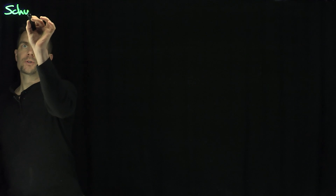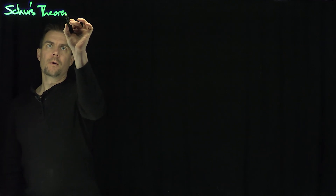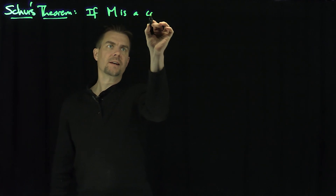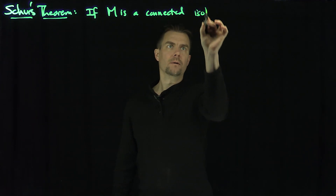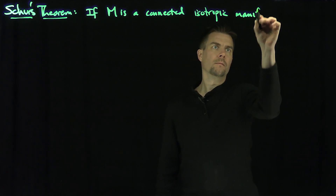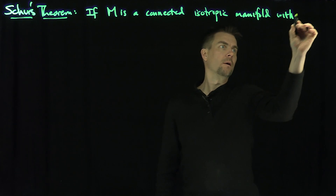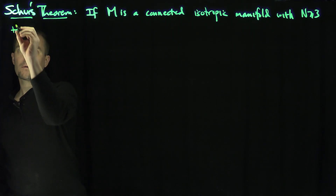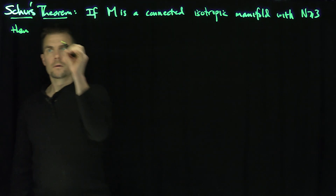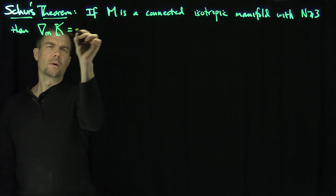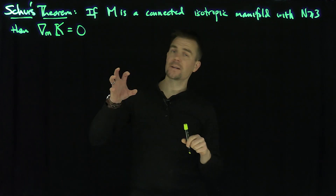Hello students. In this video we will prove Schur's Lemma. So what is Schur's Lemma or Schur's Theorem? It says if M is a connected isotropic manifold with n bigger than or equal to 3 — so this will be at least a three-dimensional manifold — then the covariant derivative of the sectional curvature is equal to zero; in other words it has constant sectional curvature.